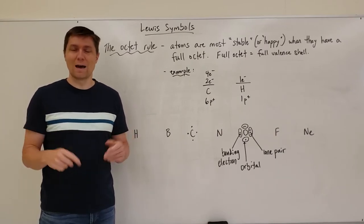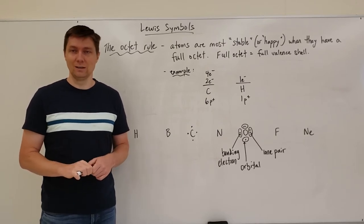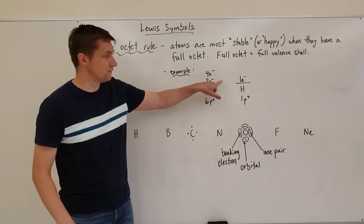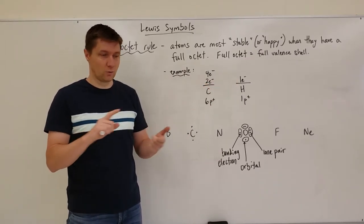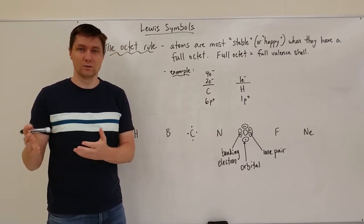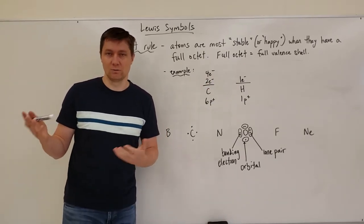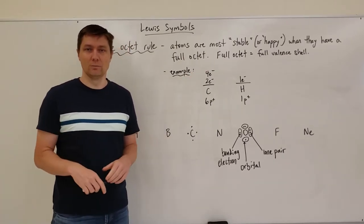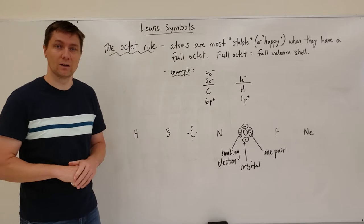There are two atoms on the periodic table that have a full octet but don't have eight electrons, and that's hydrogen and helium. Hydrogen's valence shell can only hold two electrons, since the first shell only holds two. Hydrogen and helium are the only two atoms whose valence shell is the first shell, so their valence shell is full with only two electrons. Every other atom on the periodic table needs a minimum of eight electrons to fill its valence shell — and for the purpose of this class, we're going to stick with eight electrons as the limit.